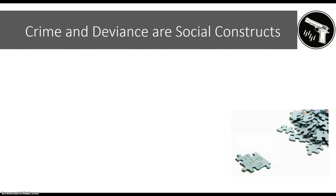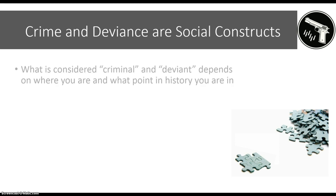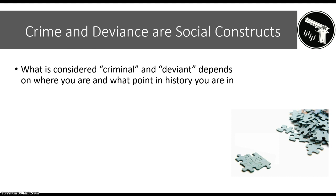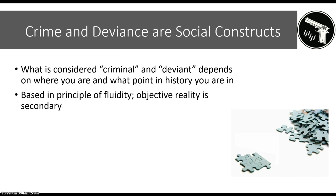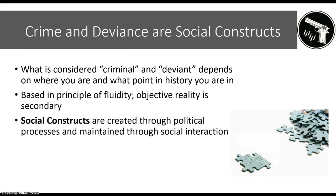The picture we are arriving at is that crime and deviance are social constructs — they are invented by human beings. What is considered criminal and deviant depends on where you are and at what point in history you are, because societies change. This idea of a social construct is based in a principle of fluidity, meaning that subjective realities define what is crime and what is deviant. What is really going on is a political battle, and social constructs are created through these different political battles.